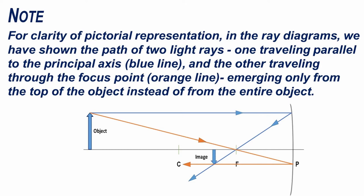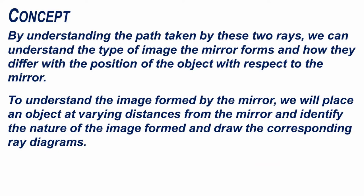For clarity of pictorial representation in the ray diagrams, we have shown the path of two light rays: one traveling parallel to the principal axis (blue line) and the other traveling through the focus point (orange line), emerging only from the top of the object instead of from the entire object. By understanding the path taken by these two rays, we can understand the type of image the mirror forms and how it differs with the position of the object with respect to the mirror.